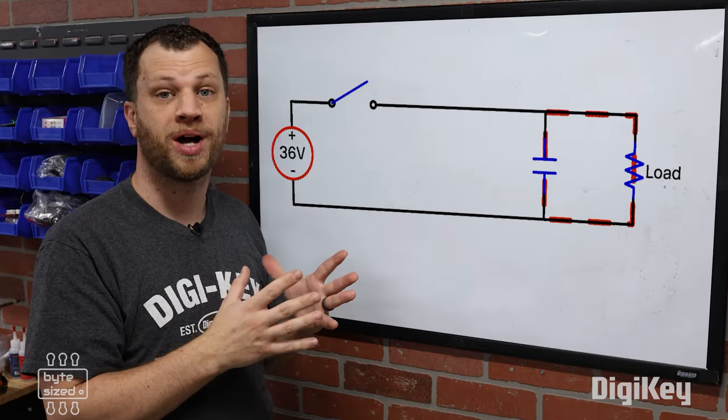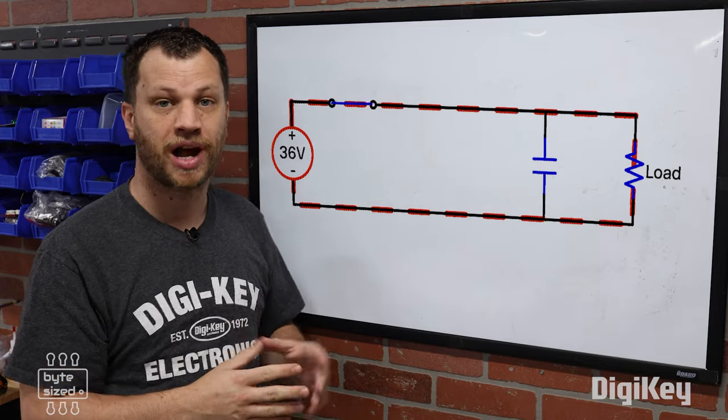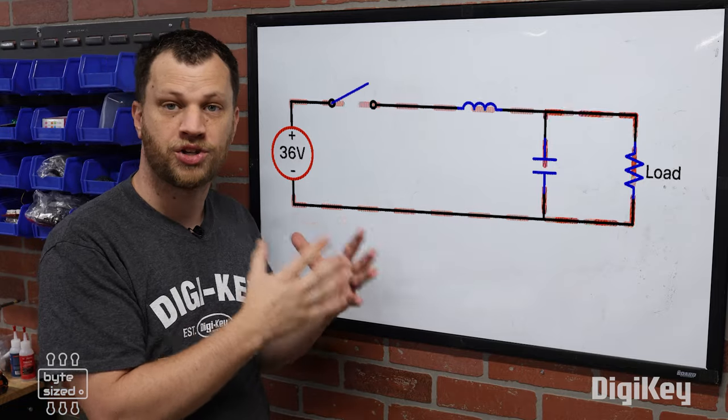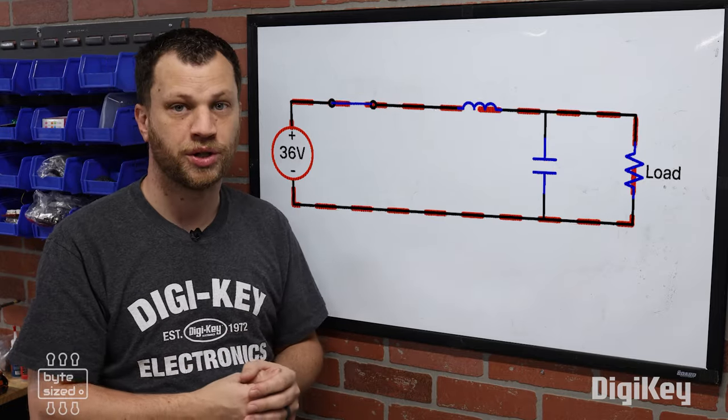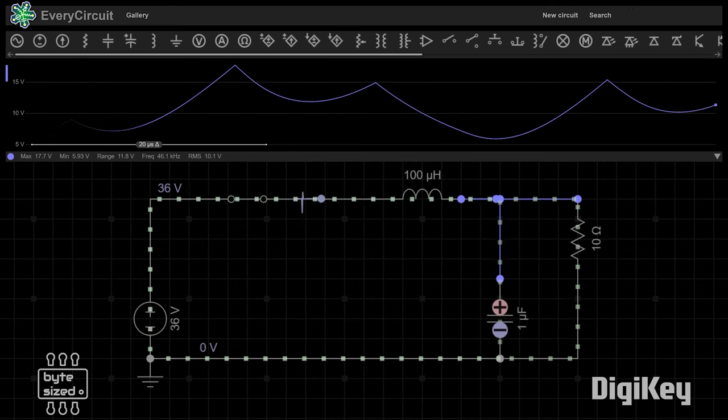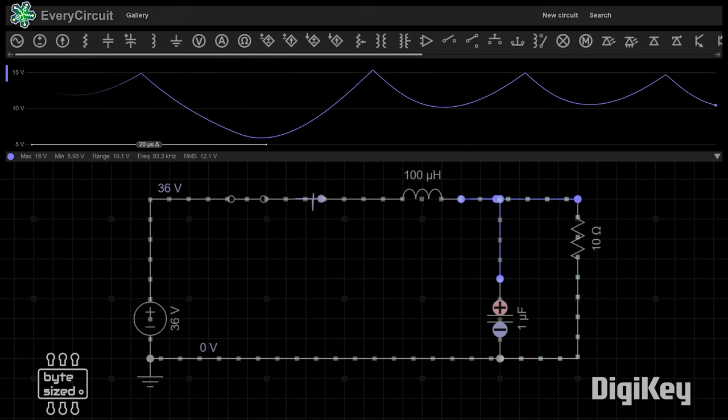The capacitor will do a good job of opposing that quick change in voltage, but to complete the low pass filter, I really need to add an inductor in series. The inductor will oppose changes in current and the capacitor will oppose changes in voltage. The opening and closing of the switch creates a square wave, but the low pass filter turns that into something more of a constant DC voltage.